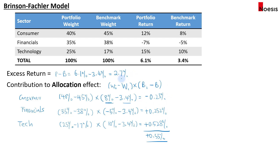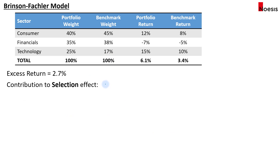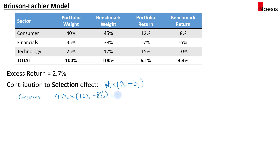Next, for the selection effect, the formula is: the benchmark weight multiplied by (the portfolio return for sector i minus the benchmark return for sector i). For consumer, that is 45% multiplied by 12% minus 8%, which equals 1.8%. The manager's security selection skill is better than the benchmark in this sector.